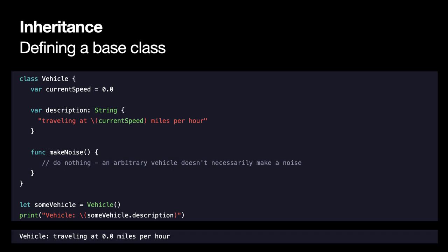To define a base class, let's look at a hands-on example. This defines a base class named Vehicle. We have a property 'currentSpeed' set to 0.0, a method that outputs the string 'traveling at' followed by the current speed in miles per hour, and a function called 'makeNoise'. In this line we create an instance of our Vehicle class named 'someVehicle'. When we print its description we receive 'traveling at 0.0 miles per hour' — very much like our structures.